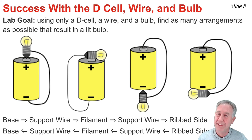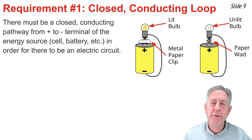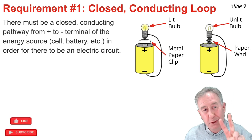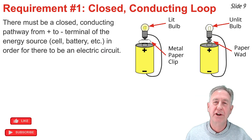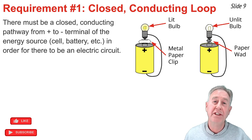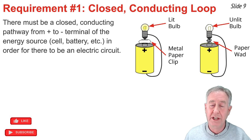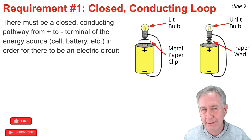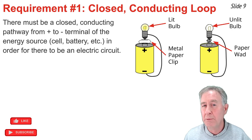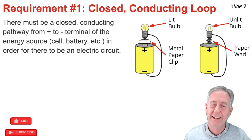The experiments I've been discussing can be summarized by saying there are two requirements for having an electric circuit. The first one is that there must be a closed conducting pathway that leads from the positive to the negative terminal of the energy source — which can be a cell, a battery, or even an outlet. If you have a closed conducting pathway, you'll have a circuit, and if a light bulb is part of that circuit, it will light.